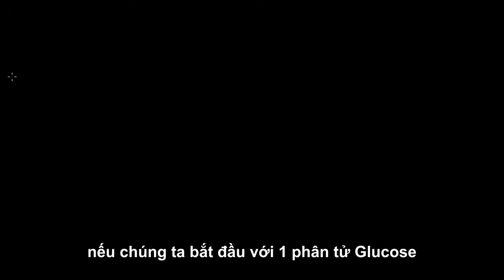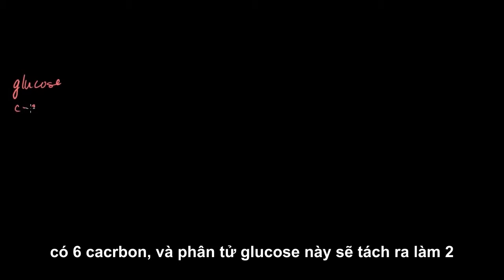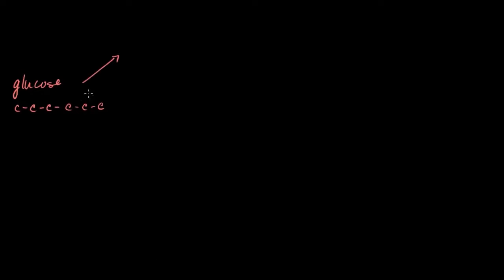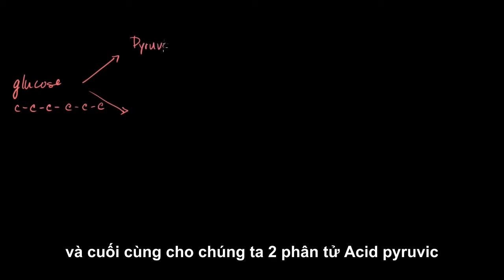So we already know that if we start off with a glucose molecule, which is a 6-carbon molecule, this essentially gets split in half by glycolysis, and we end up with two pyruvic acids or two pyruvate molecules. Glycolysis literally splits this in half, it lyses the glucose, and we end up with two pyruvates or pyruvic acids.